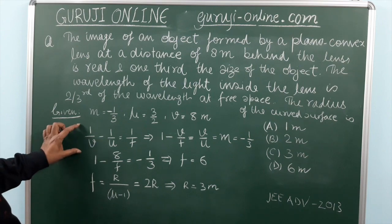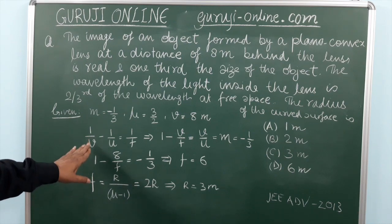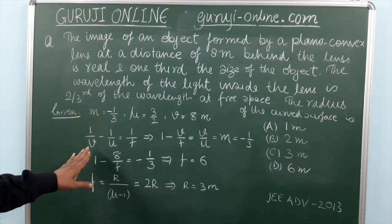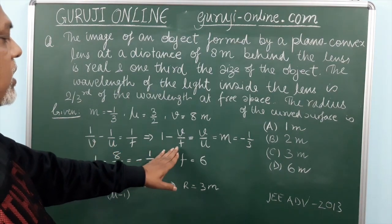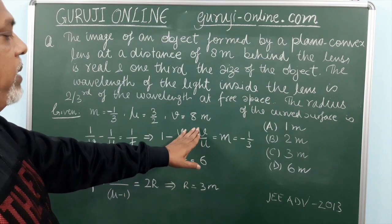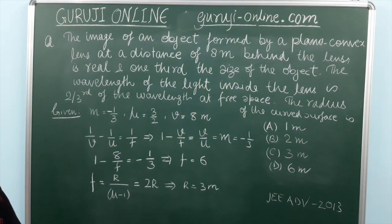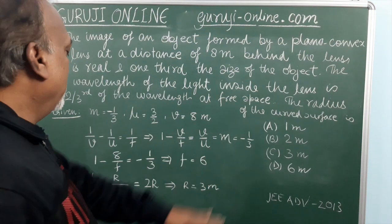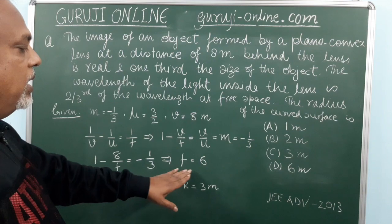So this is our normal formula, lens formula, that is 1 by V minus 1 by U is equal to 1 by F. If we rearrange this we can write this formula as this. V by U is nothing but magnification and it is given as minus 1 by 3. So from this we can find out the focal length that is coming 6 meter.